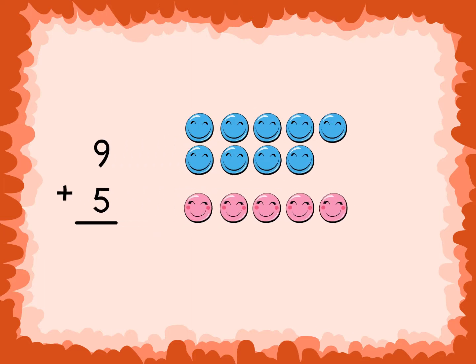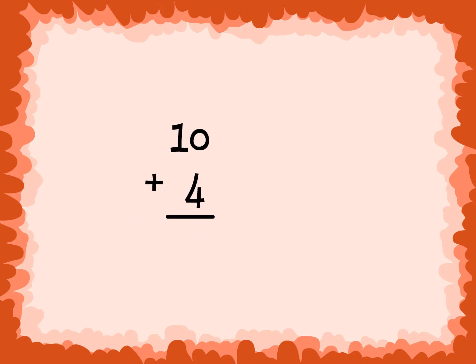Take, for example, 9 plus 5. If you make 9 into 10 by taking 1 from the 5, the 5 changes to a 4 and the 9 changes to a 10. Now we have 10 plus 4, which is equal to 14. So 9 plus 5 must also equal 14.